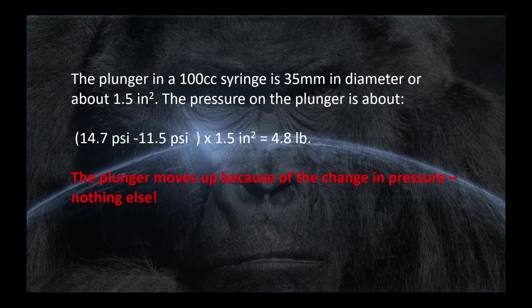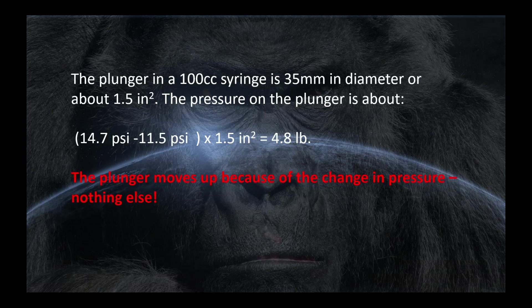The plunger in a 100cc syringe is 35 millimeters in diameter. That's about one and a half inches. So the pressure in the plunger can be calculated, and that would have been about 4.8 pounds. That's more than enough to lift the little weight that he had connected to it. The plunger moves up because of the change in pressure. Nothing else.